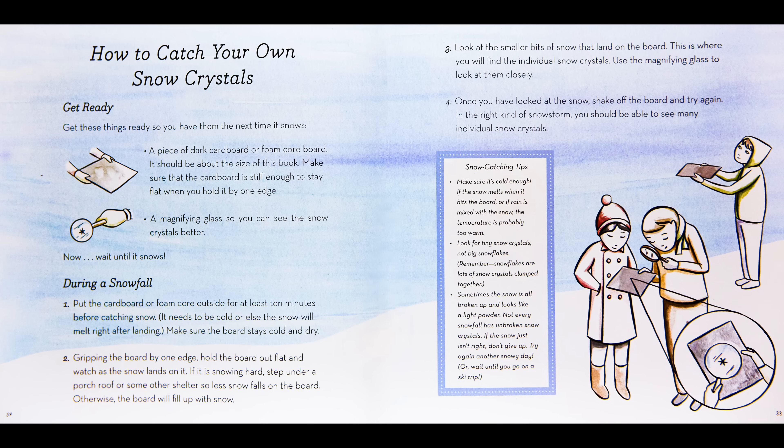A magnifying glass, so you can see the snow crystals better. During a snowfall, put the cardboard or foam core outside for at least 10 minutes before catching snow — it needs to be cold, or else the snow will melt right after landing. Make sure the board stays cold and dry. Gripping the board by one edge, hold the board out flat and watch as the snow lands on it. If it is snowing hard, step under a porch roof or some other shelter so less snow falls on the board; otherwise, the board will fill up with snow.